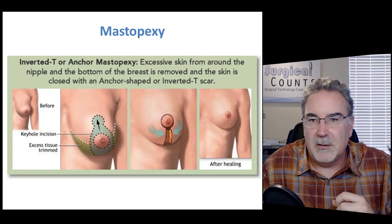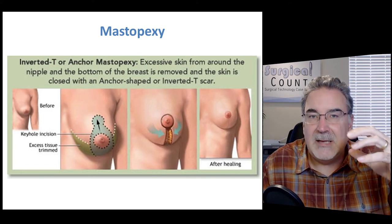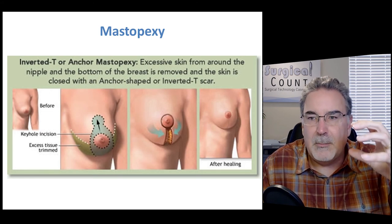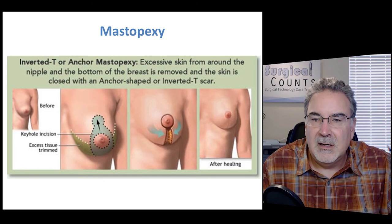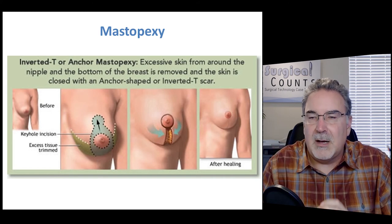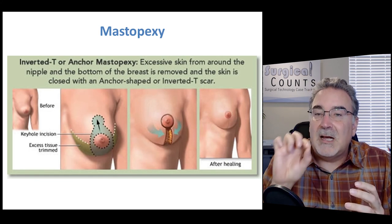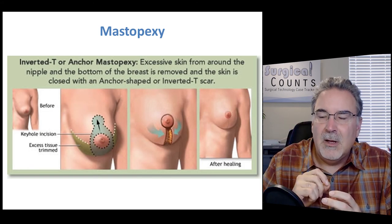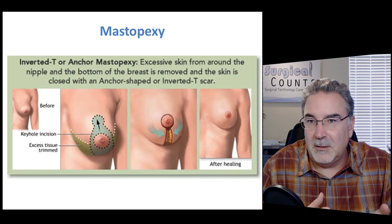A mastopexy involves reshaping the breast — the breast may have sagged and we want to bring it up and fix it in place. Pexy means to fix or solidify into place, so a mastopexy lifts the breast and fixes it in a higher position. We cut some tissue away from the bottom side of the breast, bring the breast tissue together making the bottom side smaller, and because the nipple then looks out of place, we incise around the nipple and bring it higher into the breast chest wall, putting it in a more natural position. The result is a more uplifted-looking breast.